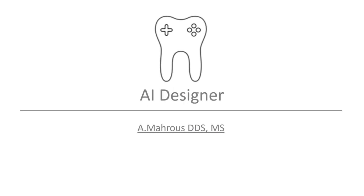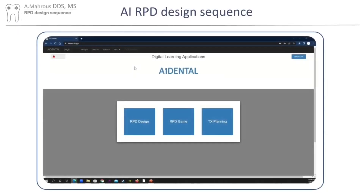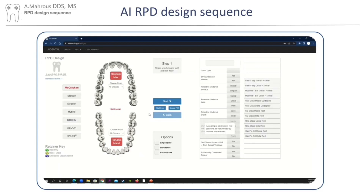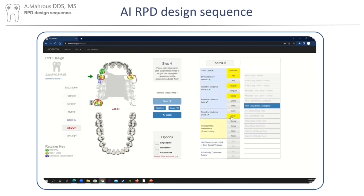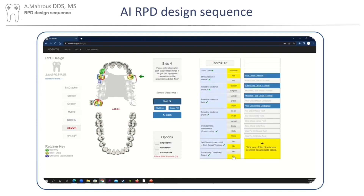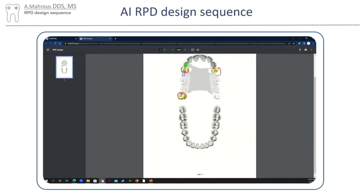Being able to design partial dentures for every single situation while abiding to a specific design philosophy can be difficult at times. Therefore, we've created an AI RPD Designer to act as your reference for future cases. The AI RPD Designer, called AI Dental, can be accessed by typing www.aidental.app from any browser. Once at the main page, go ahead and click RPD Design. You can pick from whatever design philosophy you find suitable for you, but the ASDO — Arizona School for Dentistry and Oral Health — as well as the SPEAR philosophy, most closely abide to the philosophies explained in this lecture. You can then click which teeth are missing, decide which abutment criteria exist, and find out which design is most suitable for you. For more information on how to use the AI Dental RPD Designer, find the video linked in the description or up here.